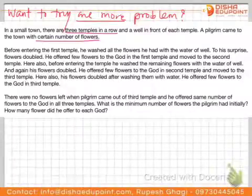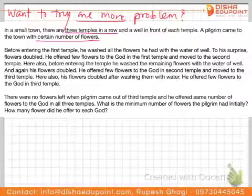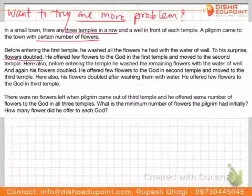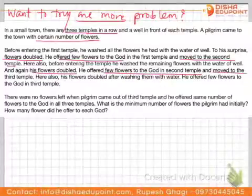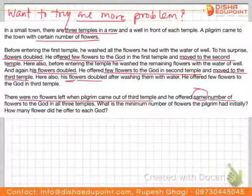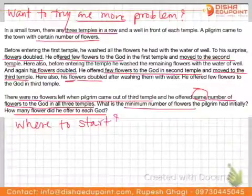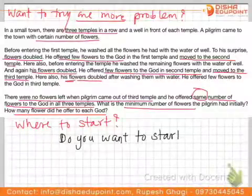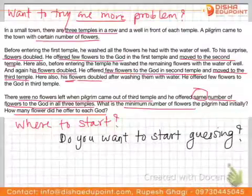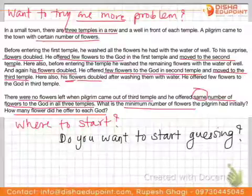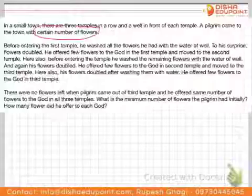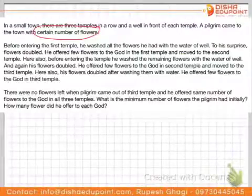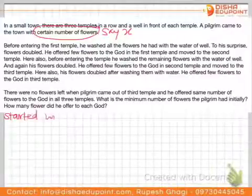Let's read the key points: three temples, flowers double at each well, same number offered at each temple. Where to start? We should not guess — instead, start with a variable. Let the pilgrim begin with x flowers, and let y be the number of flowers offered at each temple.